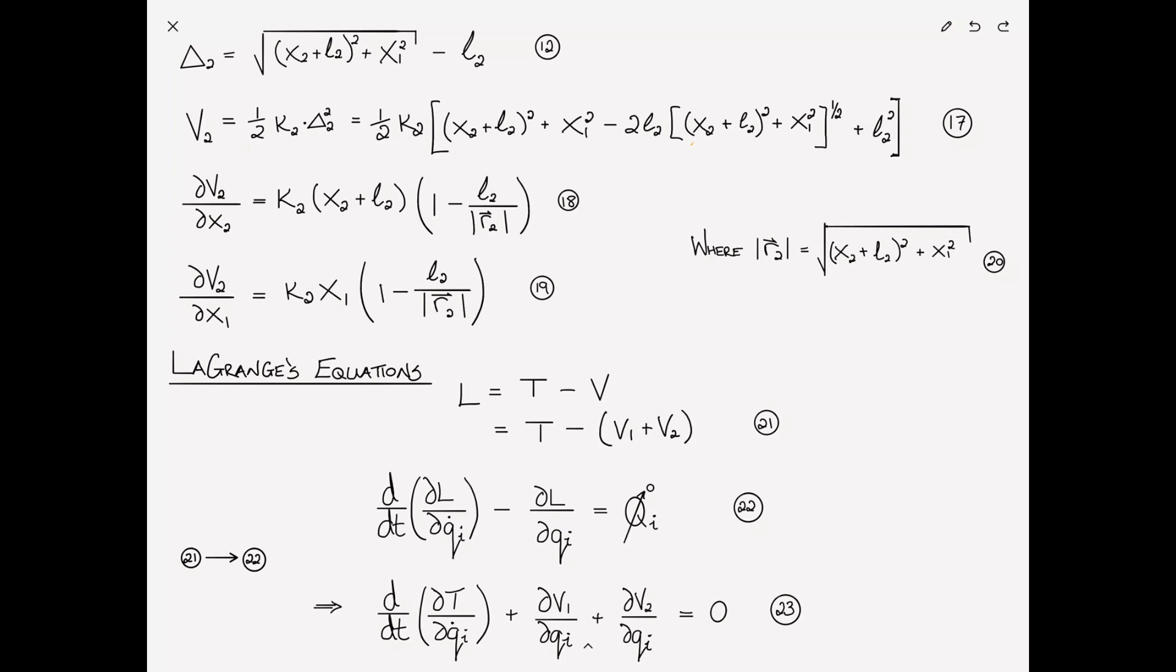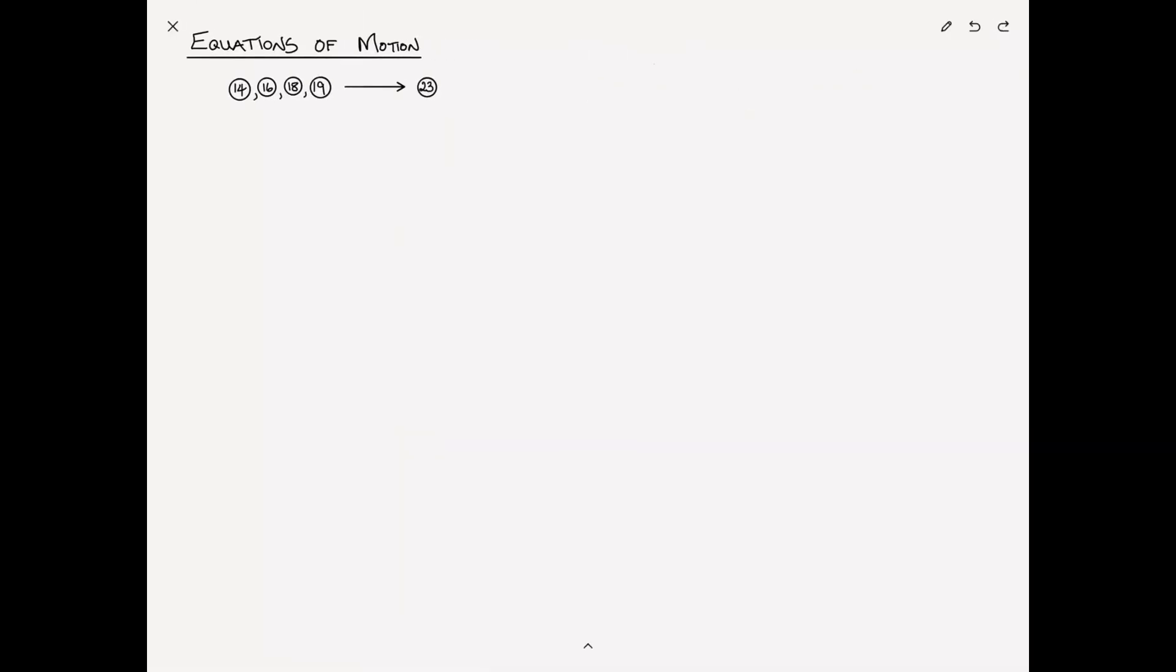And I'll remind you, I wrote it and deleted it earlier, that the kinetic energy T is just simply 1 half m x1 dot squared plus x2 dot squared. So on the next page, I can get the equations of motion by substituting equations 14, 16, 18, and 19 into equation 23.